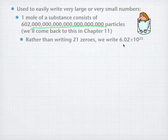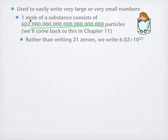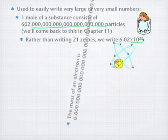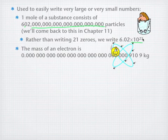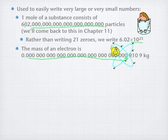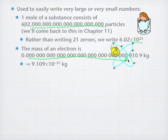Rather than writing those 21 zeros out, we're going to put a decimal point after the 6, and then use those zeros as a magnitude and write them as times 10 to the 23rd. You'll see why it's 23 and not 21 in a few minutes. On the very small side, the mass of an electron is this many kilograms — 30 zeros all the way to the 9. We put a decimal point after the 9 and get 9.109 times 10 to the minus 31 kilograms.